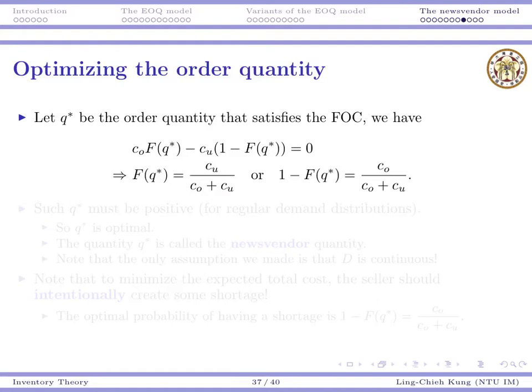We say they are implicit solutions. I cannot directly write Q star as the function of cu and co. However, I know there is one equation that must be satisfied by Q star. If I know F, I can express the optimal solution like this.